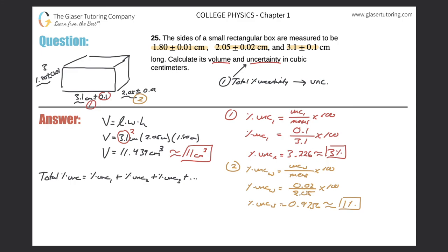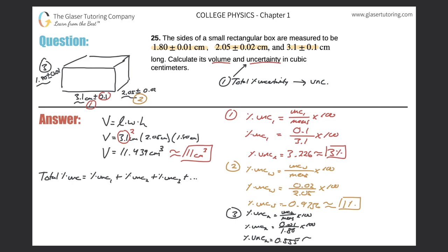Now for the height. The percent uncertainty in the height equals the uncertainty of the height divided by the measurement, times 100. That's 0.01 divided by 1.80 times 100. We get 0.555 repeating. Rounded to one significant figure, that's 0.6%.